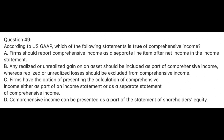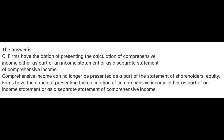Question 49. According to U.S. GAAP, which of the following statements is true of comprehensive income? A. Firms should report comprehensive income as a separate line item after net income in the income statement. B. Any realized or unrealized gain on an asset should be included as part of comprehensive income, whereas realized or unrealized losses should be excluded. C. Firms have the option of presenting the calculation of comprehensive income either as part of an income statement or as a separate statement of comprehensive income. D. Comprehensive income can be presented as a part of the statement of shareholders' equity. The answer is C. Comprehensive income can no longer be presented as a part of the statement of shareholders' equity. Firms have the option of presenting it either as part of an income statement or as a separate statement of comprehensive income.